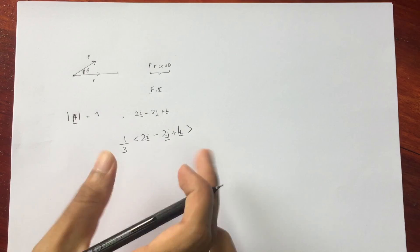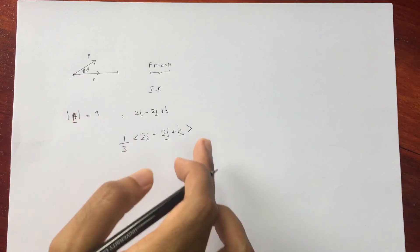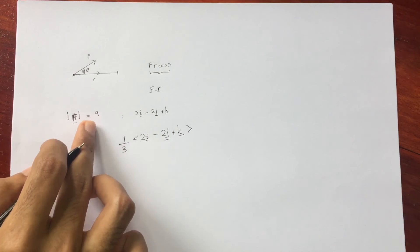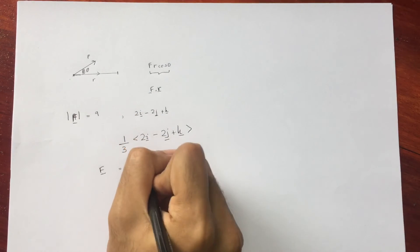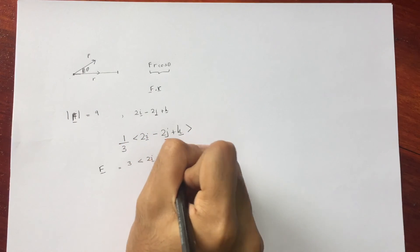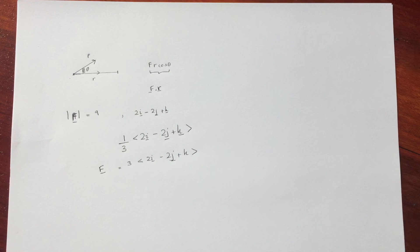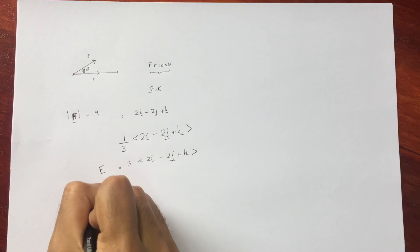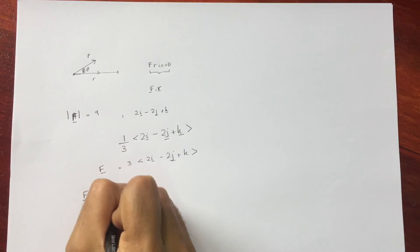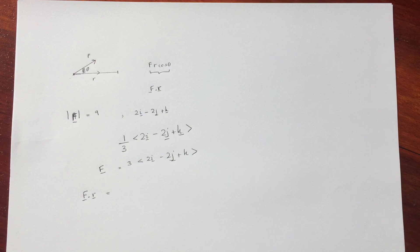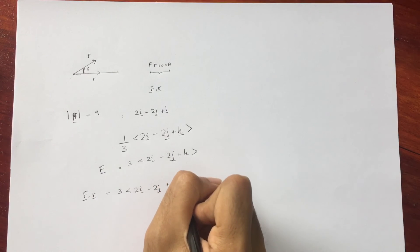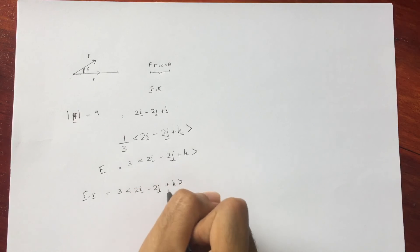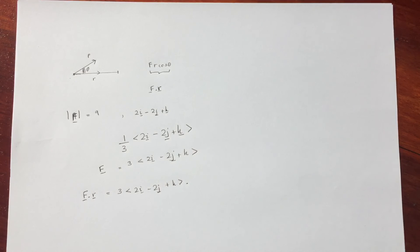This is the unit vector of that direction. Since f is also in this direction and the magnitude is 9, the force vector is 9 times (1/3) times (2i minus 2j plus k), which gives 3(2i minus 2j plus k). Now we have found the force vector. Next we need to compute f dot r, which will give the work done. So f = 3(2i minus 2j plus k), which we can write as (6i minus 6j plus 3k), and now we need the displacement vector.